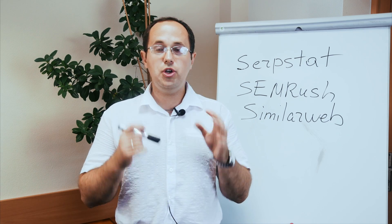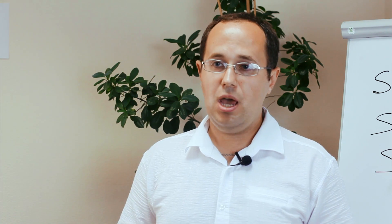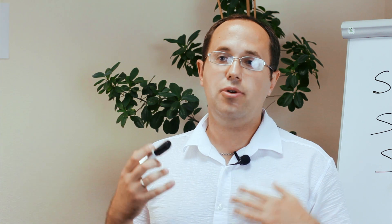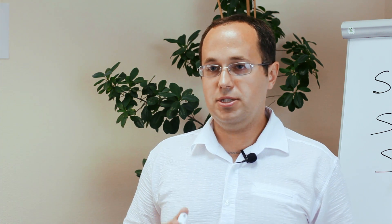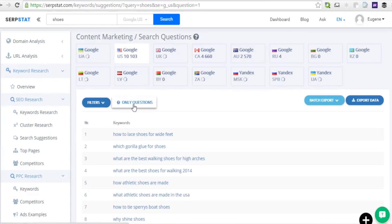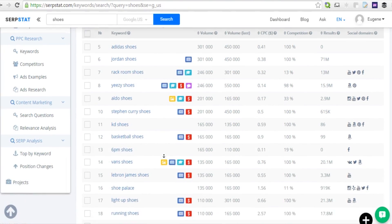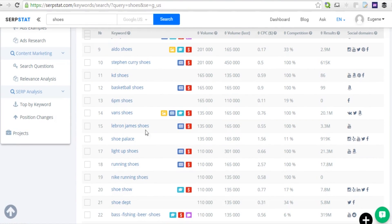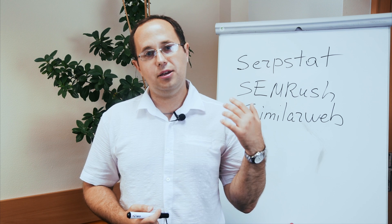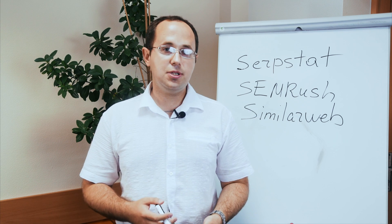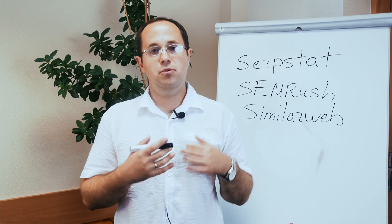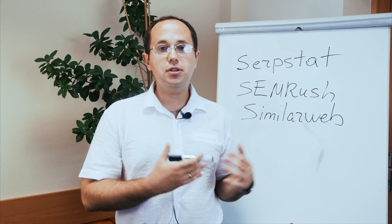But what features can you use from Serpstat? You can get a lot of ideas on how to create your content plan — it's quite easy. You have questions and you can go to Serpstat and ask them. You will have a lot of ideas for keywords, and each keyword can become an article, video, infographic, and so on. Of course, if you want to know more about your competitors in search engine optimization, PPC, and other areas, you can get that from Serpstat.